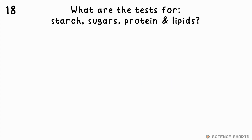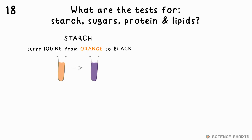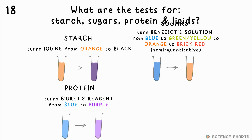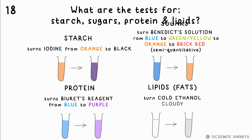Question 18. What are the tests for starch, sugars, protein, and lipids? Iodine turns from orange to black in the presence of starch. Sugar turns Benedict's solution from blue to orange, and maybe green in between. Protein turns Biuret's reagent from blue to purple, and lipids turn cold ethanol cloudy.